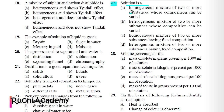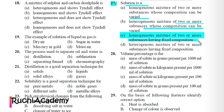Question 27: A solution is: A) A homogeneous mixture of two or more substances whose composition can be varied, B) A heterogeneous mixture of two or more substances whose composition can be varied, C) A homogeneous mixture of two or more substances, D) A heterogeneous mixture of two or more substances having fixed composition. Correct answer is A.